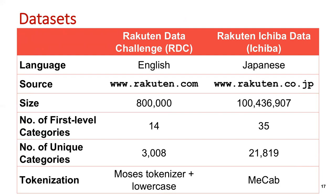The second is the Rakuten Ichiba dataset in Japanese, used for the Japanese domestic market from Rakuten.co.jp, containing 100 million product titles with 35 level categories and over 21,000 unique categories at the last level. We tokenized the RDC dataset with the MOSES tokenizer and lowercased the inputs; the Ichiba dataset was tokenized using MiCAD. We split the data into train, validation, and test sets in a stratified manner: 80% train, 10% validation, and 10% test.